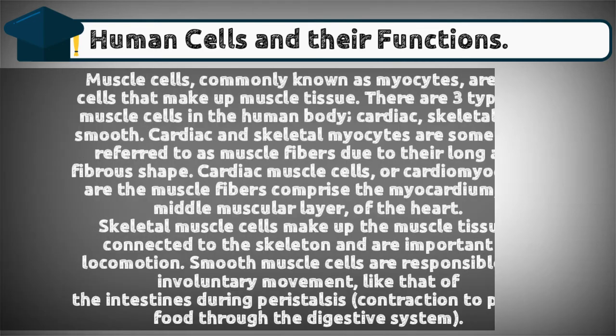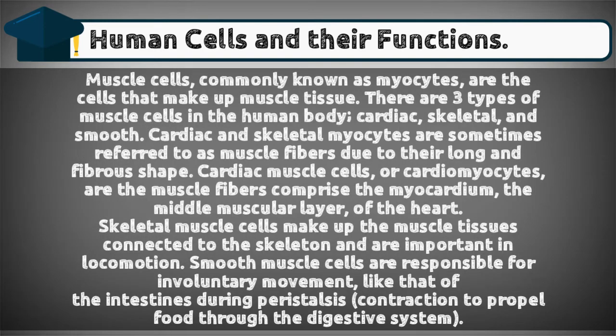Muscle cells, commonly known as myocytes, are the cells that make up muscle tissue. There are three types of muscle cells in the human body: cardiac, skeletal, and smooth. Cardiac and skeletal myocytes are sometimes referred to as muscle fibers due to their long and fibrous shape.